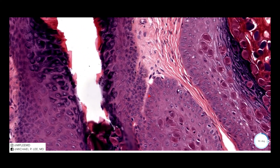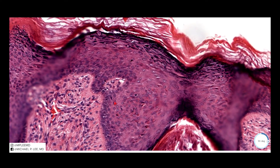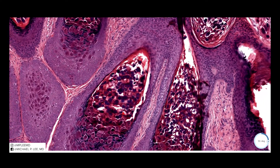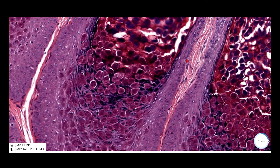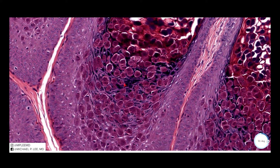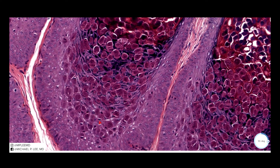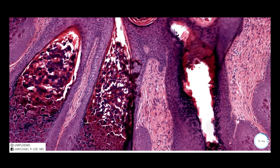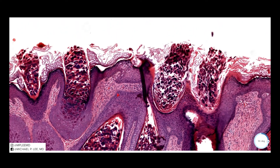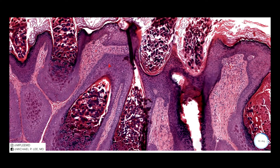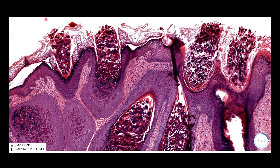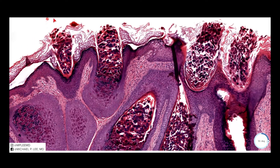These molluscum bodies are very characteristic — they are redder in color than the myrmecia inclusions. You can see here again we have nuclei that are well displaced. The special name for these is Henderson-Patterson bodies, or you can just call them molluscum contagiosum viral bodies. Oftentimes they can sort of flower through the epidermal surface. These are highly contagious, which is why clinically you often see multiple papules.